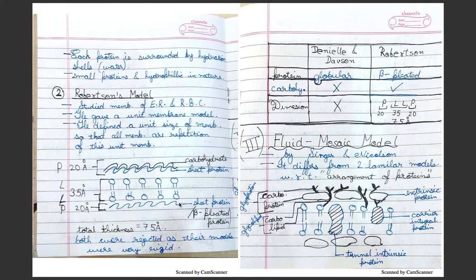He also told the dimensions: protein and lipid, lipid and protein, just the same. He told that the bilayer was 35 angstroms, one protein sheet was 20 angstroms, and another sheet was also 20 angstroms, so total thickness was 75 angstroms. Both these models, Robertson's model and Danielli-Davson's model, were rejected.